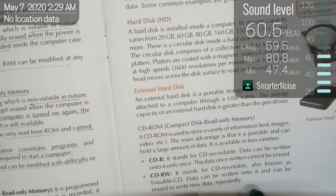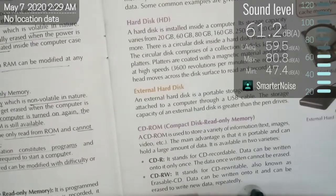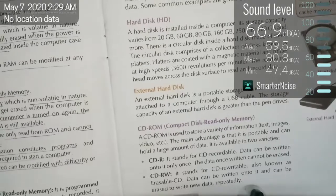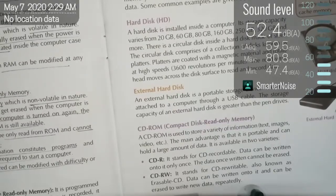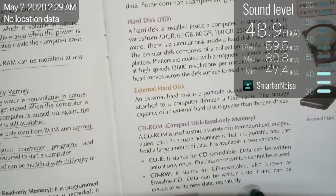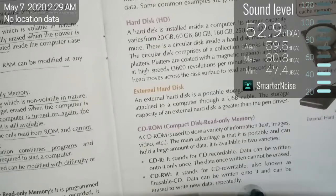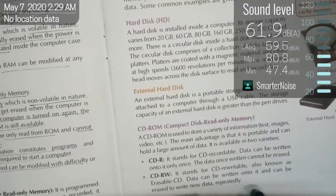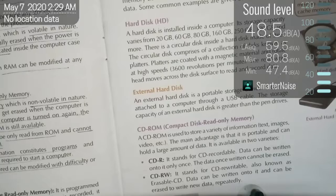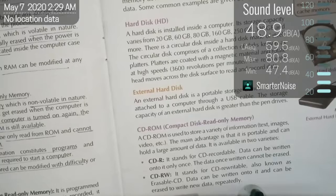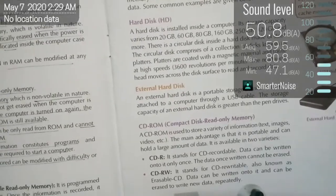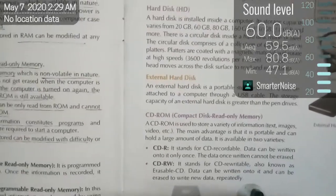In a gramophone recorder, a disk is placed and a pin is put on top of it. As the disk rotates, the music plays. Similarly, that same concept is used in a hard disk — the pin placed on the disk helps to write as well as read from the disk.